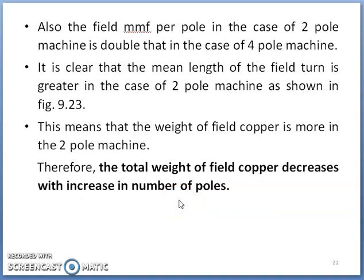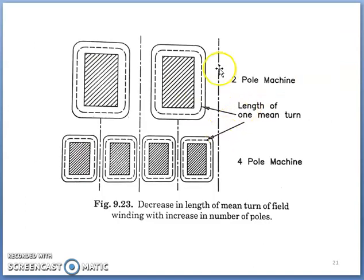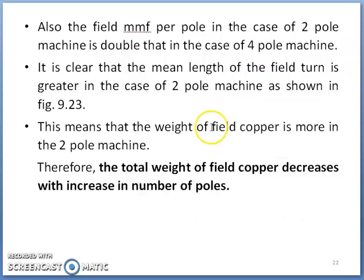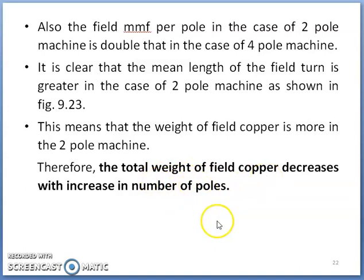As the field MMF per pole in the case of a two-pole machine is double that of a four-pole machine, the mean length of turn is greater in the case of a two-pole machine, as shown in the figure — the field section is larger. Because of this, the weight of field copper is more in the case of a two-pole machine. Therefore, the total weight of field copper decreases with increase in number of poles. If number of poles are increased, depending upon field MMF per pole, the requirement of field copper changes and hence total weight of field copper decreases.